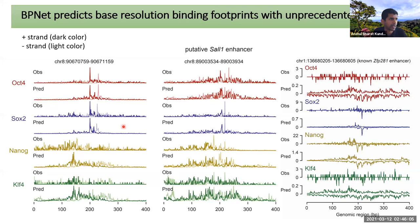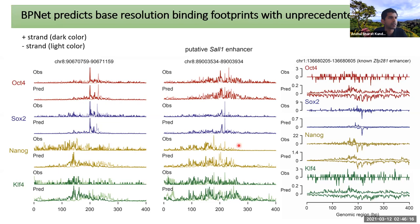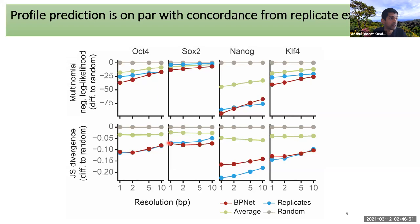To evaluate genome-wide, we compute similarity between predicted and observed profiles using the Jensen-Shannon divergence at single-base, 2-base, 5-base, and 10-base resolutions. The red curve shows model performance; the blue curve is replicate-to-replicate concordance (upper bound); the gray curve is comparison against shuffled profiles (lower bound). In many cases the model is essentially as good as replicate concordance — as accurate as replicate experiments are with each other.